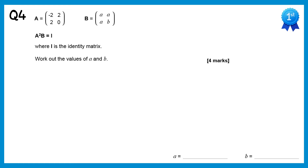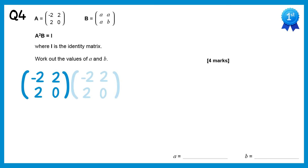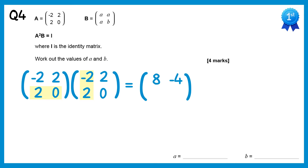For this question we need to work out A squared B. We'll do that by working out A squared first, then multiplying by B. A squared is matrix A times matrix A. Starting with negative 2, 2 multiplied with negative 2, 2: negative 2 times negative 2 is 4, and 2 times 2 is also 4, giving 8. Then negative 2, 2 with 2, 0: negative 2 times 2 is negative 4, and 2 times 0 is 0, so it's negative 4. Then 2, 0 with negative 2, 2: 2 times negative 2 is negative 4, and 0 times 2 is 0, so negative 4 again. Finally 2, 0 with 2, 0: 2 times 2 is 4, and 0 times 0 is 0, so it's 4.